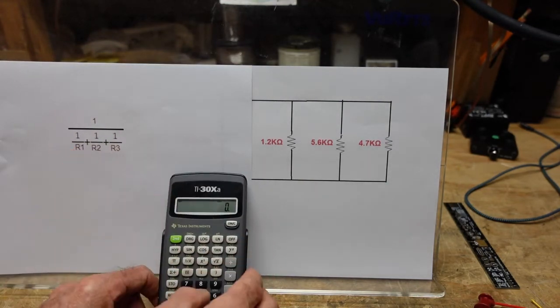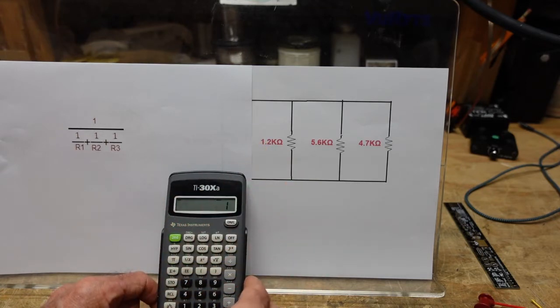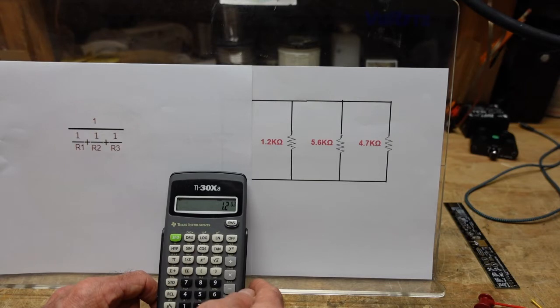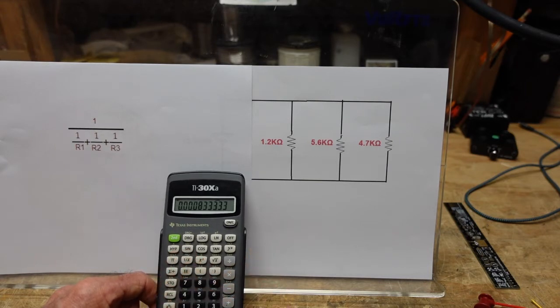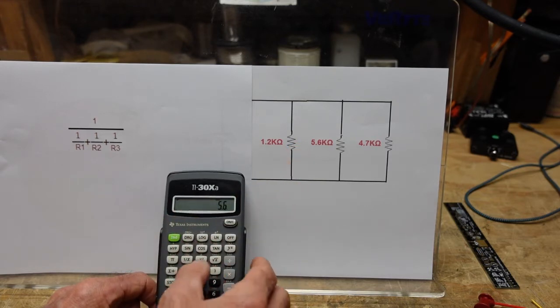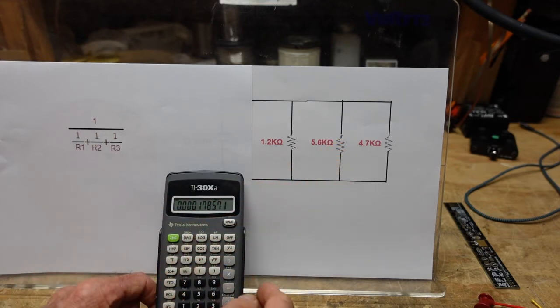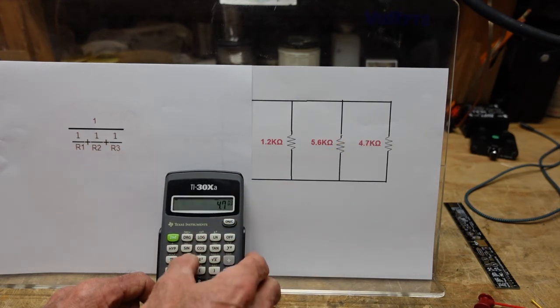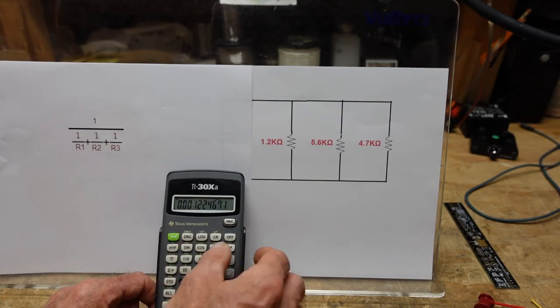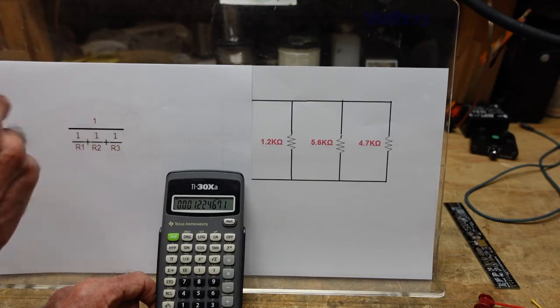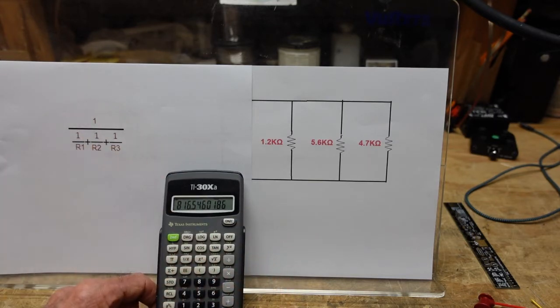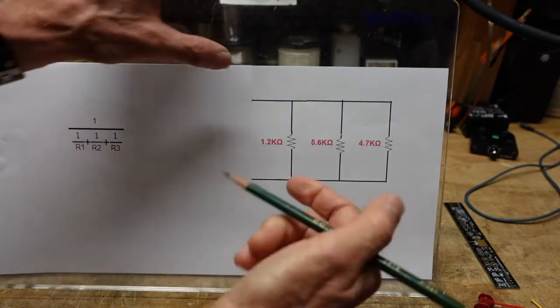Let's do the math on this. Our formula is here so we need to take the reciprocal of 1.2×10³, 1/x plus 5.6×10³—remember exponent 3 gives us kilohms—1/x plus 4.7×10³, 1/x equals, and then we do 1/x here to go back to resistance.